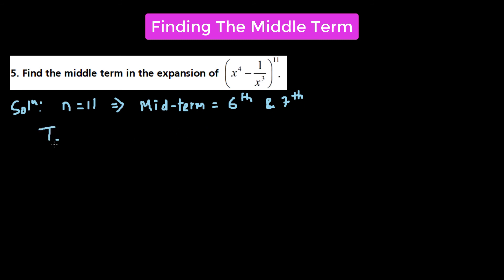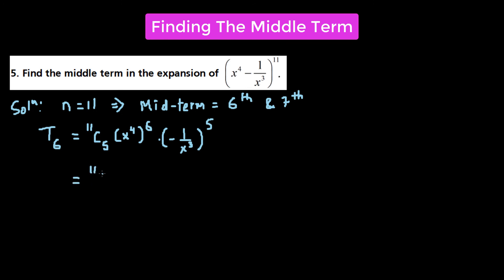For T6: 11C5 times (x⁴)^(11−5) = (x⁴)⁶, times (−1/x³)⁵. This equals 11C5 times x^(6×4) = x²⁴, times (−1)⁵, divided by x¹⁵. So 11C5 = 462, and (−1)⁵ = −1, and x^(24−15) = x⁹. So T6 = −462x⁹.